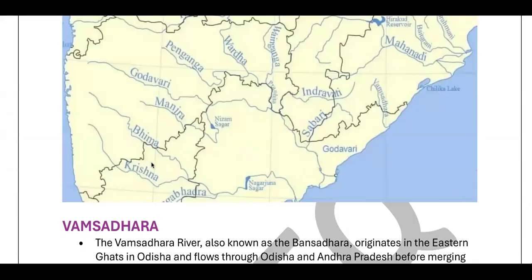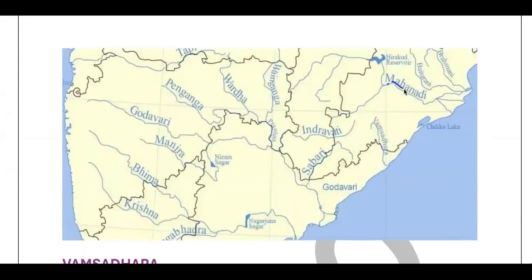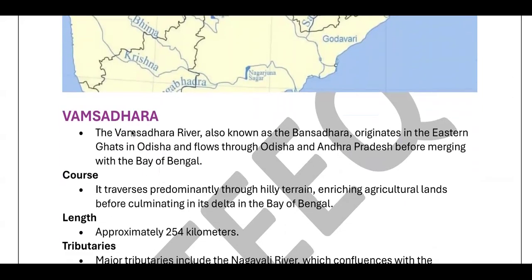Looking at the map, you can see how the Mahanadi flows, with the Brahmani and Baitarani joining nearby, and Chilika Lake at the delta. The Indravati flows and finally joins the Godavari. You can also see Wainganga and Wardha, and how Pranahita is formed by their merger before joining the Godavari. The Sabari river is also visible. The Vamsadhara is another independent river — not a tributary of any other river — and it flows through Odisha and Andhra Pradesh.